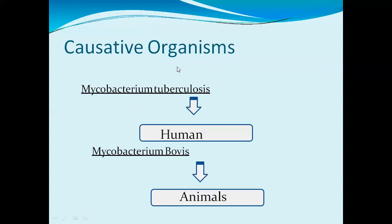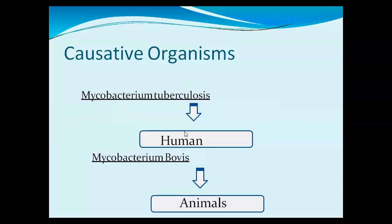The causative organism or causative agent of tuberculosis is a bacterium known as Mycobacterium tuberculosis. This Mycobacterium tuberculosis is an acid-fast bacterium. The main characteristic of acid-fast bacteria is that they have a higher percentage of a specific fatty acid in their cell wall, called mycolic acid.